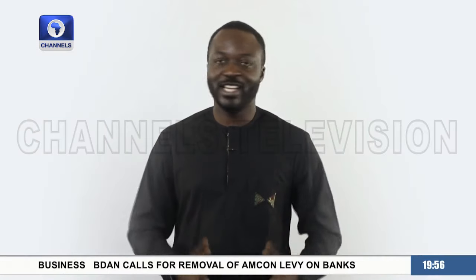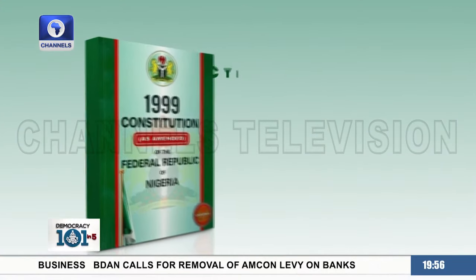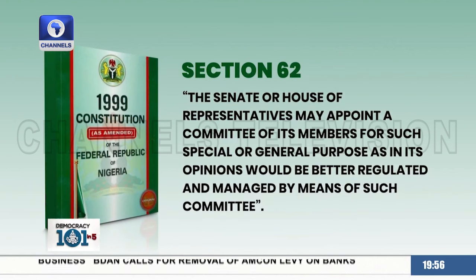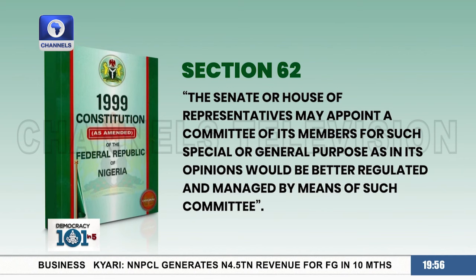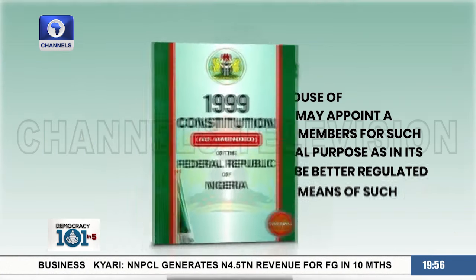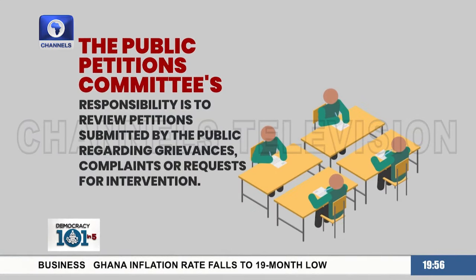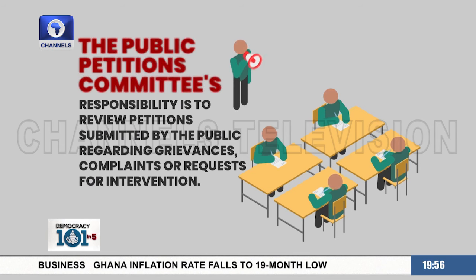Those are definitely some very interesting responses. Section 62 of the 1999 Constitution as amended states that the Senate or House of Representatives may appoint a committee of its members for such special or general purpose as, in its opinion, would be better regulated and managed by means of such committee. Hence, the creation of the public petitions committee, whose responsibility is to review petitions submitted by the public regarding grievances, complaints, or requests for intervention by the committee.